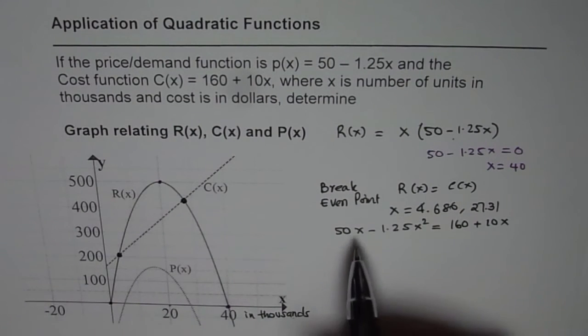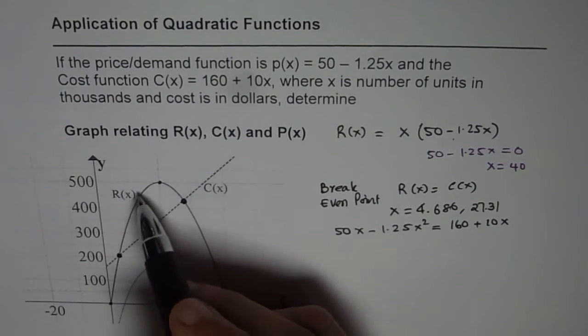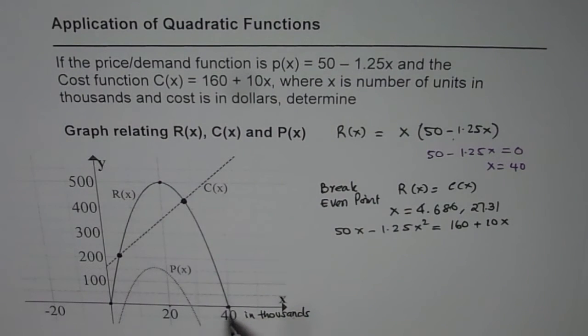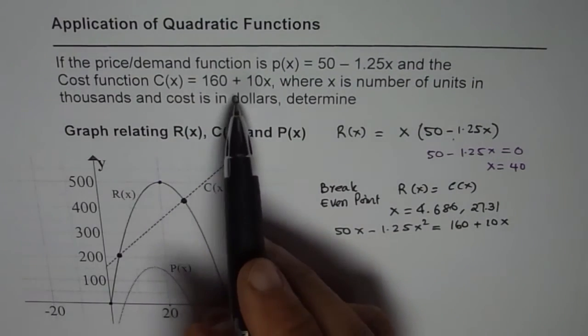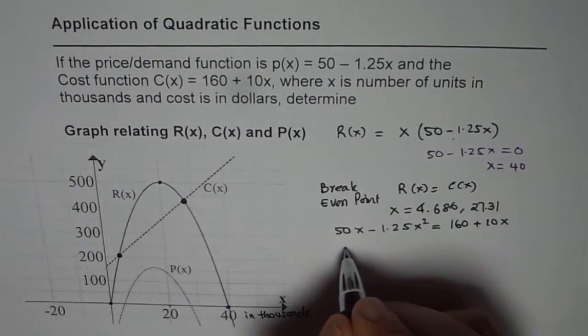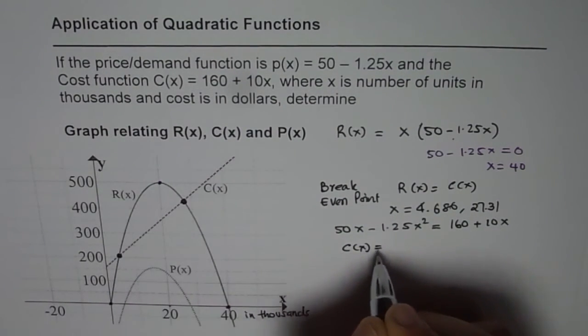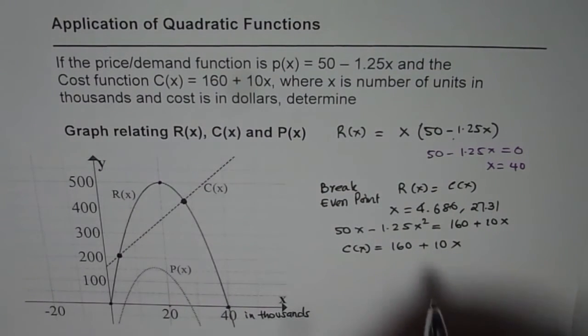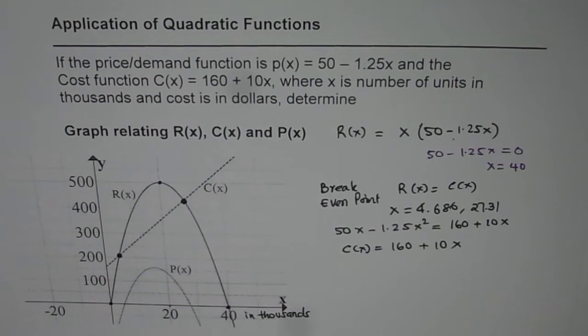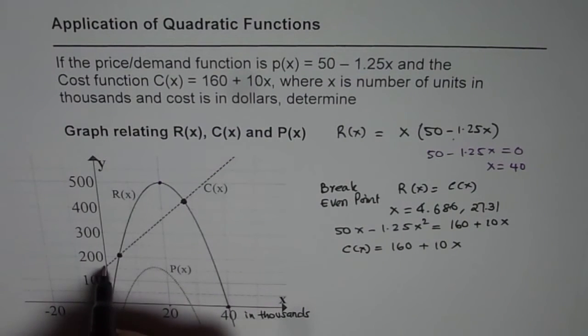Graphical solution for this is we have a graph for revenue function which is a parabola, then you sketch the graph for the line. The cost function is 160 + 10x, so 160 is your y-intercept.